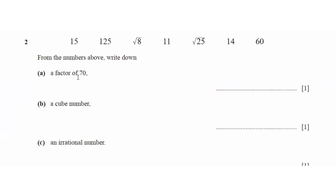Question 2 gives us some numbers and says: from the numbers above, write down a factor of 70. For a number to be a factor of 70, it also has to be a multiple of 7. Looking at these numbers, 14 is the only one that is a multiple of 7.